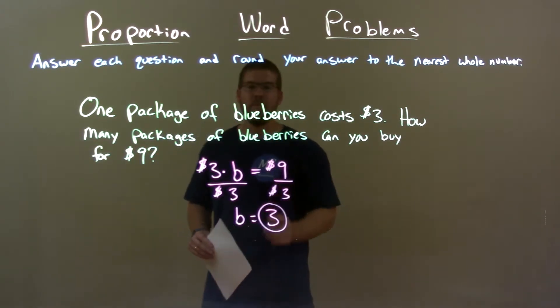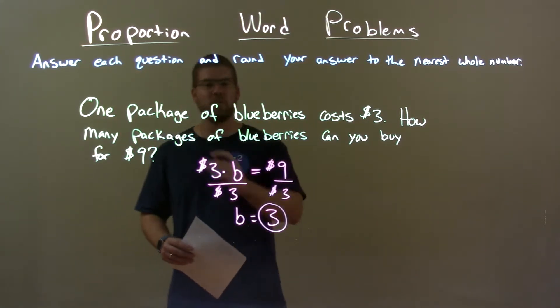B is now by itself and $9 divided by $3 is $3. So our final answer here is that we can buy three packages of blueberries for $9.